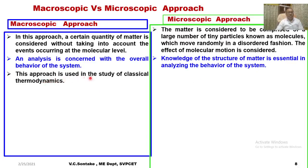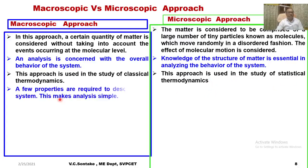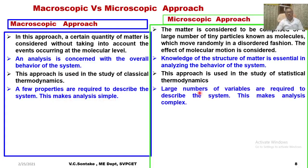Macroscopic approach is used in the study of classical thermodynamics, whereas microscopic approach is used in the study of statistical thermodynamics. In the macroscopic approach, a few properties are required to describe the system, which makes analysis simple. A large number of variables are required to describe the system in the microscopic approach, and this makes the analysis quite complex.